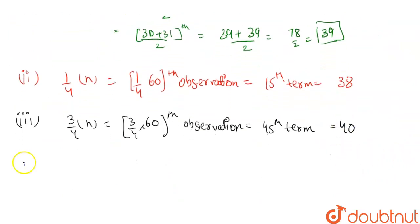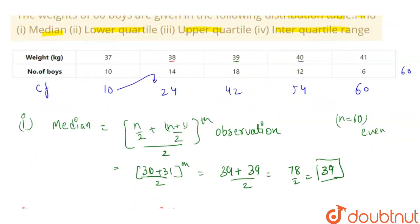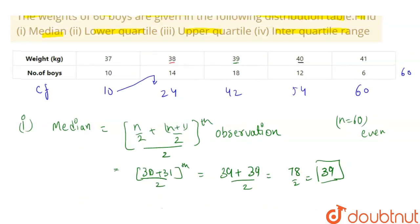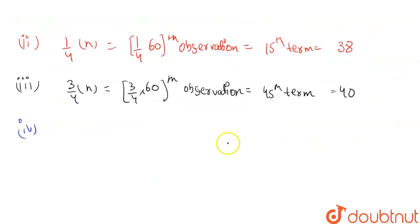Right, and the last part, 4th part was interquartile range, that means upper quartile minus lower quartile, which equals 40 minus 38, that means range comes out to be 2.